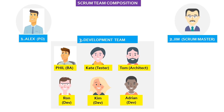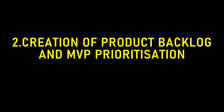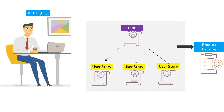Jim sets up a meet-and-greet session with all the team members. Next, we move on to the second item: creation of product backlog and MVP prioritization. Alex refers to the requirements captured from the elicitation sessions held the previous week and starts logging epics and user stories in Jira. Epics are high-level requirements, broken down further into user stories. All epics and user stories put together are termed as a product backlog.